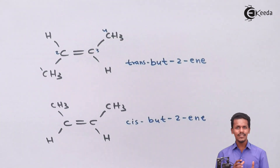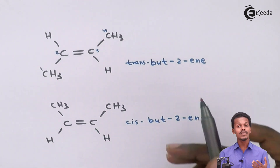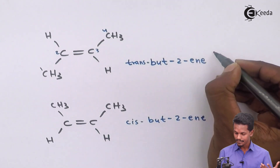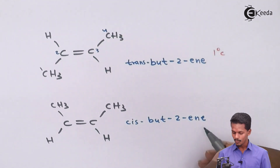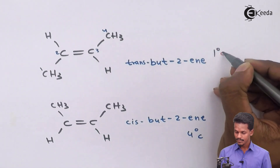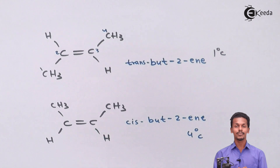Talking about the physical property — specifically boiling point — the trans isomer has a boiling point of 1°C, while the cis isomer has a boiling point of 4°C. So there is a difference in physical properties in terms of boiling point.